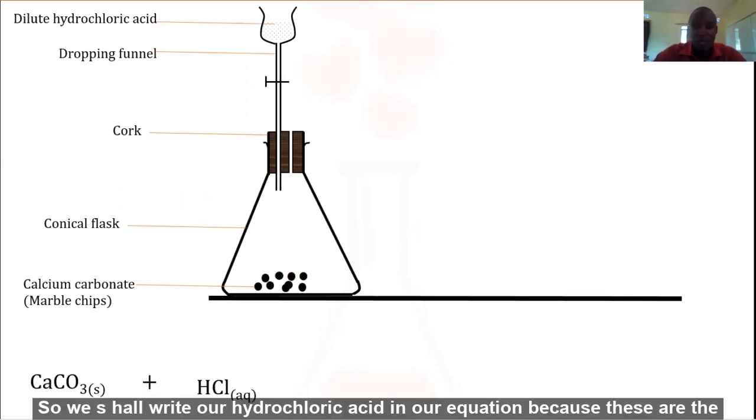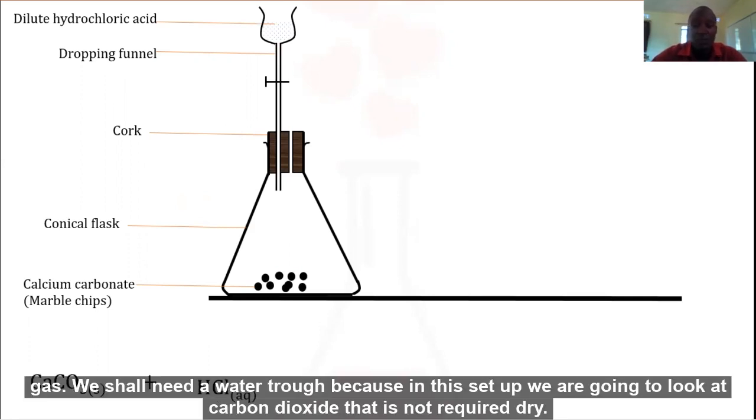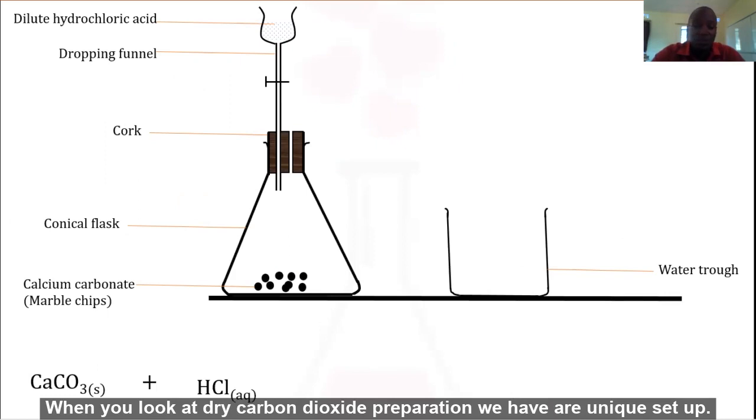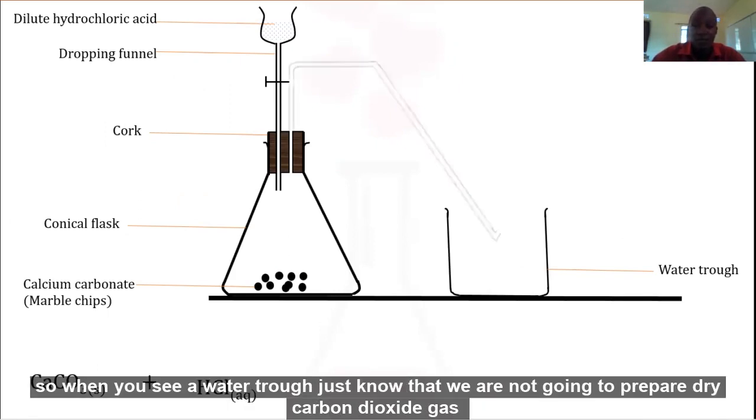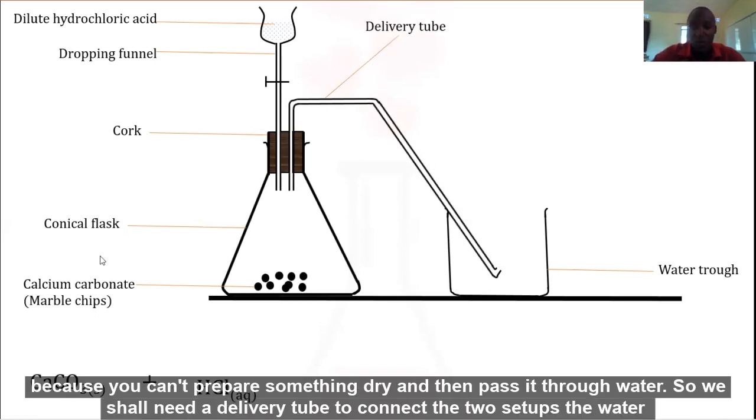We shall write hydrochloric acid in our equation because these are the reactants basically needed in the lab preparation of carbon dioxide gas. We shall need a water trough because in this setup we are going to prepare carbon dioxide that is not required dry. When you say water trough, just know that we are not going to prepare dry carbon dioxide gas because you can't prepare something dry and then pass it through water.